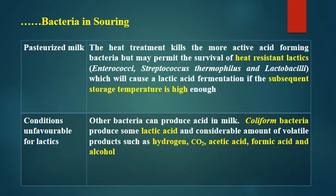For pasteurized milk, most common acid-producing bacteria are destroyed by heat treatment. However, some heat-resistant lactics can survive, such as Enterococci, Streptococcus thermophilus, and lactobacilli, and can cause lactic acid fermentation if subsequent storage temperature is suitable. When conditions are unfavorable for lactics, other organisms like coliform bacteria can grow, producing some lactic acid and considerable volatile products such as hydrogen, carbon dioxide, acetic acid, formic acid, and alcohol.